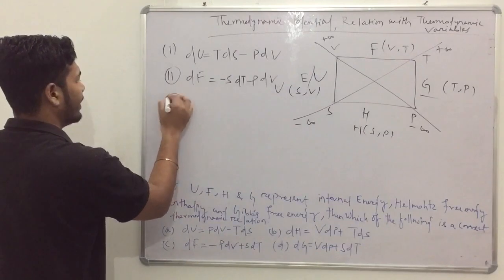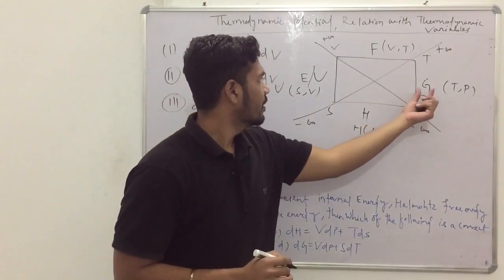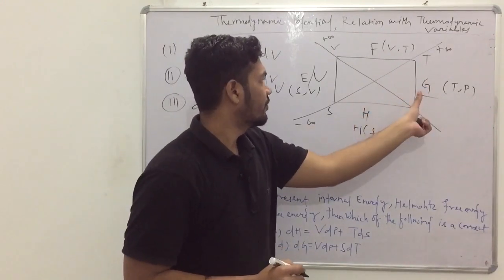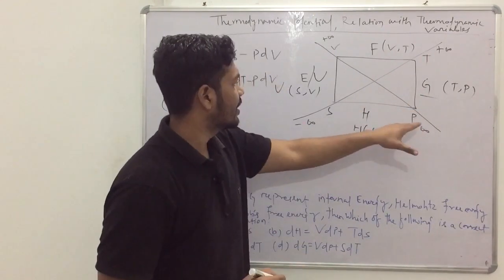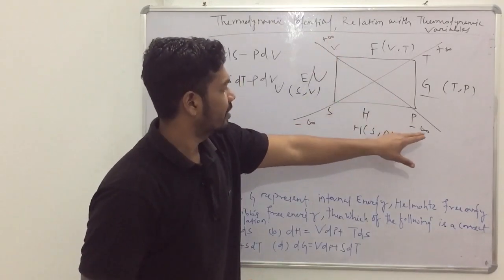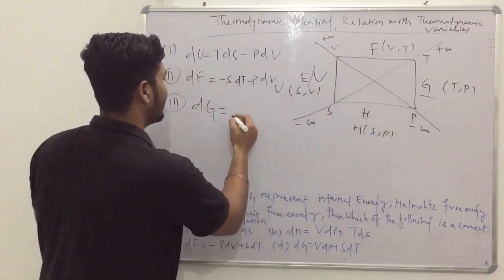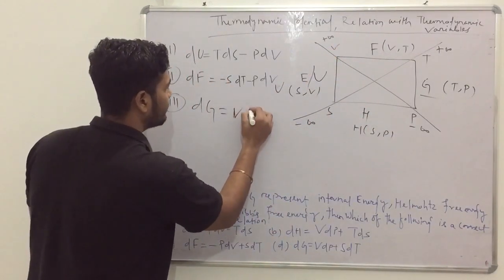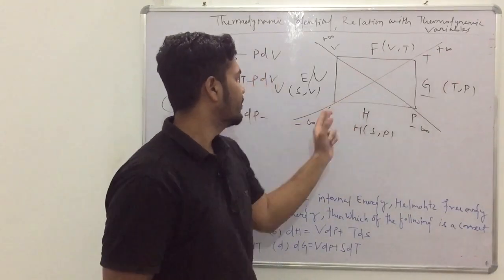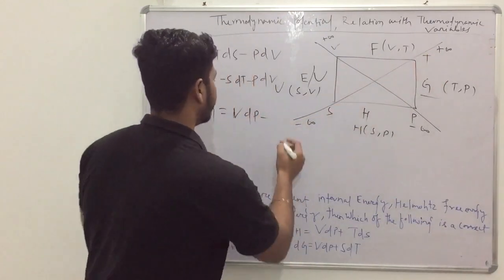For Gibbs free energy G, it is a function of pressure P and temperature T. The pressure-to-volume diagonal goes from minus to plus infinity, making it positive, so we write VdP. The temperature term goes from plus to minus infinity, so it is negative, giving −SdT. Therefore: dG = VdP − SdT.